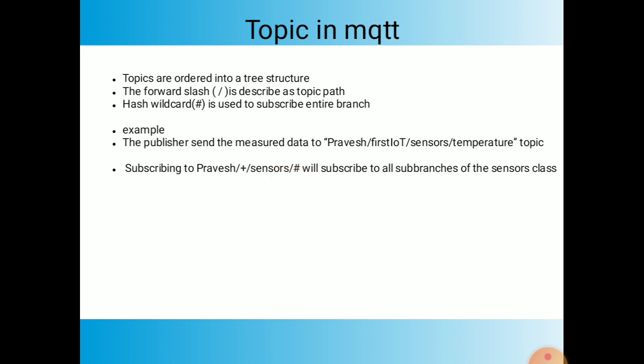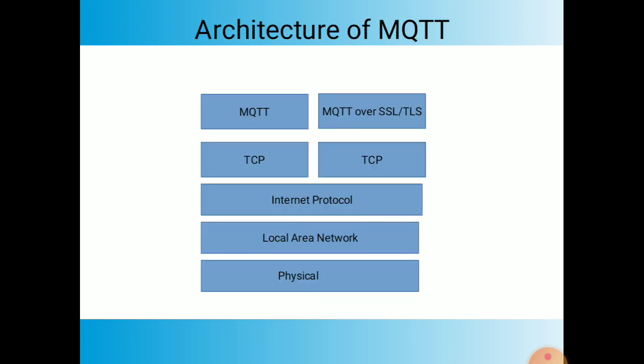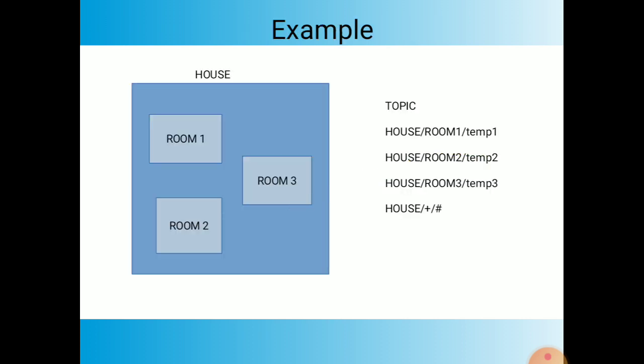Now we talk about the architecture of MQTT and how MQTT works. There is a physical layer, local area network and internet protocol, TCP, and then MQTT or SSL on top. I will give an example of how topics work across these layers.